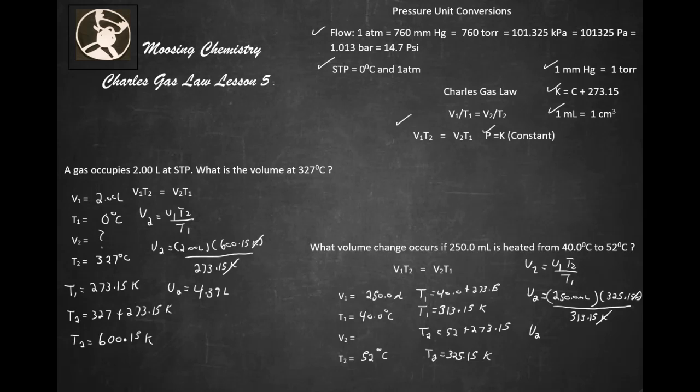So V2 is going to equal, let's see here, 250 times 325.15, it's a pretty big number there, divided by 313.15, and we get 259.58 milliliters. So 259.58 milliliters.